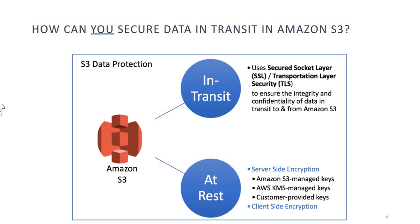How can you secure data in transit in AWS S3? You can secure data in transit in Amazon S3 by using SSL (Secured Socket Layer) and TLS (Transportation Layer Security) encryption. This encrypts the data as it travels between your client and the S3 service, helping to protect against interception and eavesdropping, ensuring the integrity and confidentiality of data in transit to and from Amazon S3.